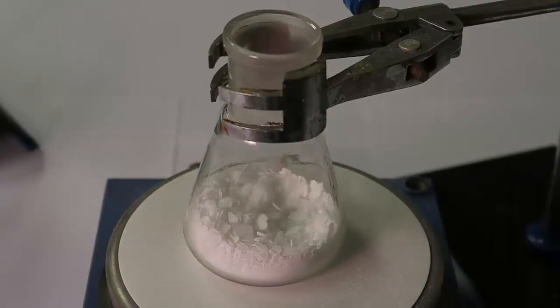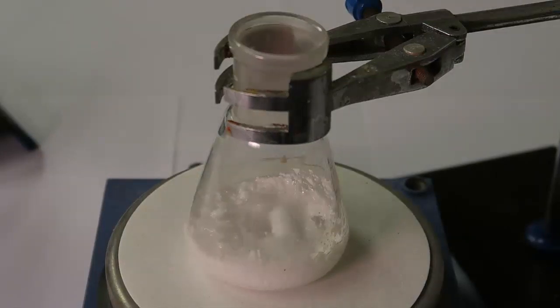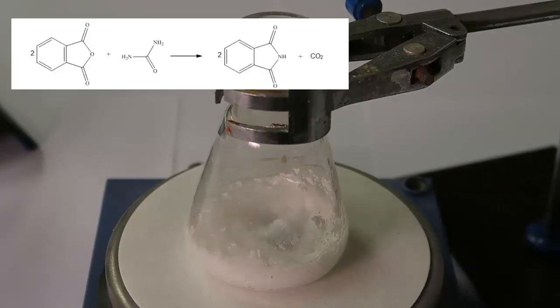The mixture is then heated to 135°C to liquefy it. Once the chemicals are molten together, that's when the reaction starts. The overall reaction is shown above. Basically, one of the amine groups of the urea attacks one of the carbonyls producing an intermediate, which then splits into ammonia and CO2 gas. The ammonia is then able to react with another molecule of phthalic anhydride.